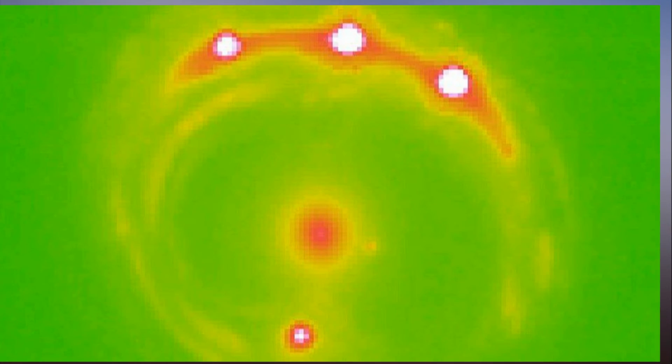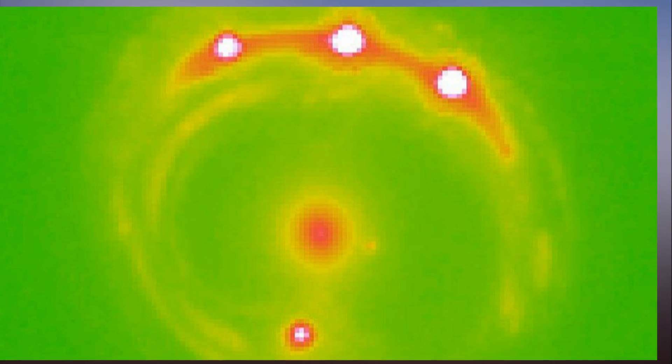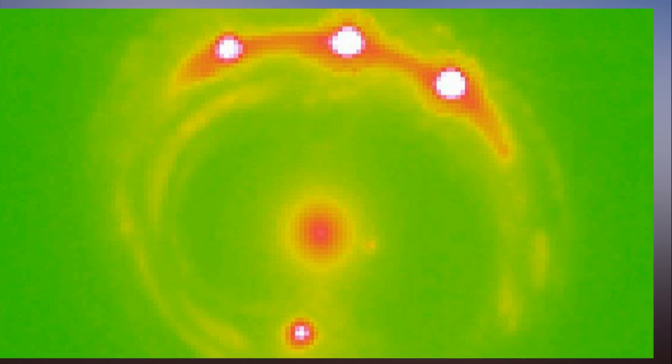The team used the Chandra X-ray Observatory to scan the galaxy, called RxJ 1131-1231, in the center of the above image, finding signals that could be planets.